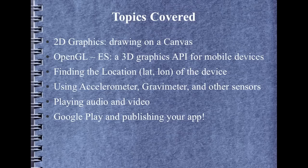We'll talk about finding the location of the device — the latitude and the longitude — and displaying that for the user. And then we'll talk about other hardware sensors the device has, such as thermometers, accelerometers, and gravimeters, that allow us to find out where the device is in space — its position, its orientation, and also its acceleration at a given point in time.